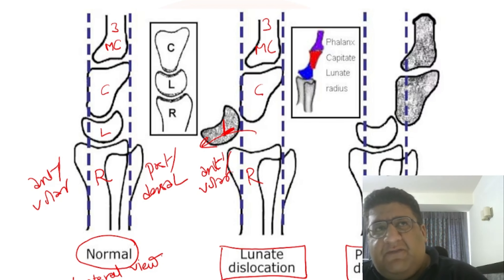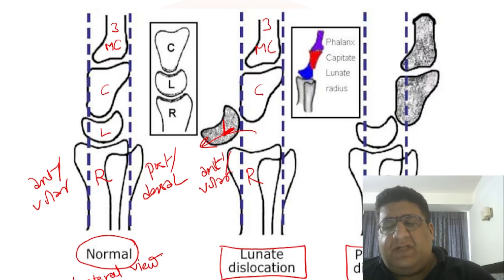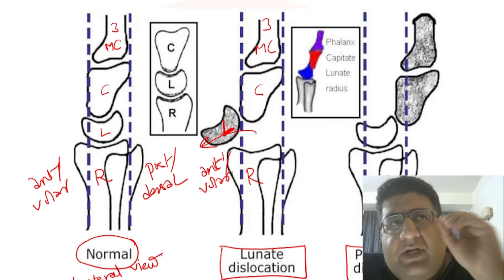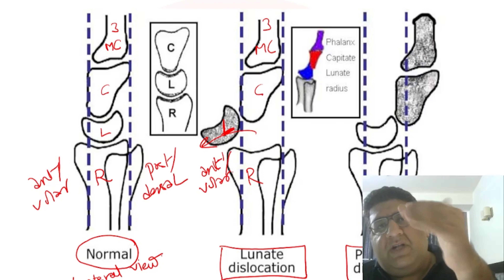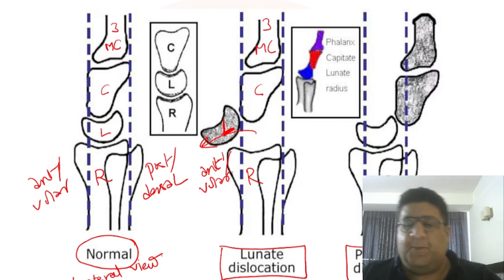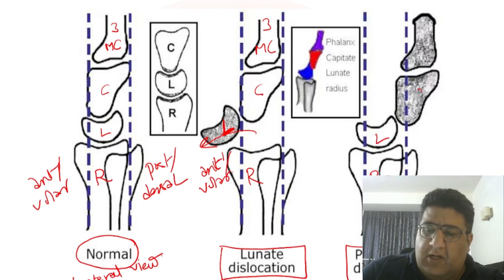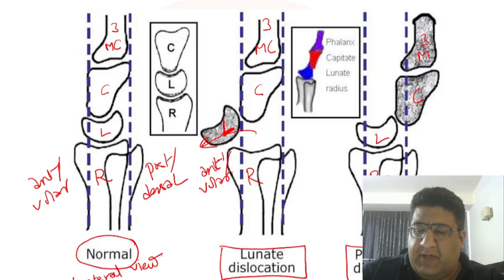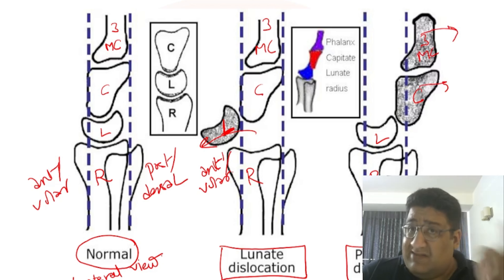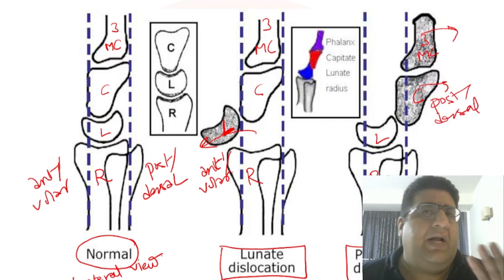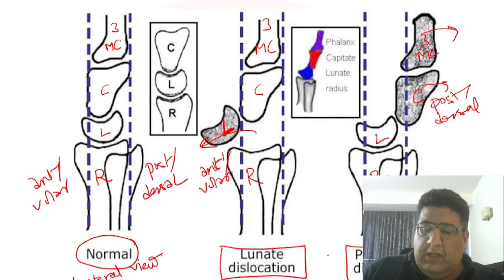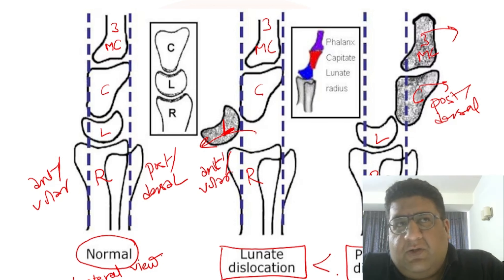Now for perilunate dislocation — life is easy if you want to make it easy. In perilunate dislocation, the bone that dislocates is 'peri' to lunate, meaning distal to lunate. And in perilunate dislocation, those bones dislocate posteriorly. So radius and lunate remain in sync, while capitate and third metacarpal dislocate in the posterior or dorsal direction.